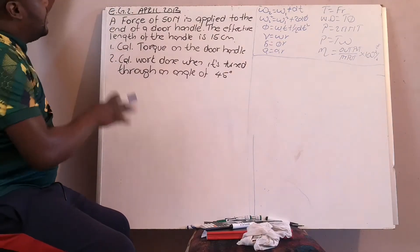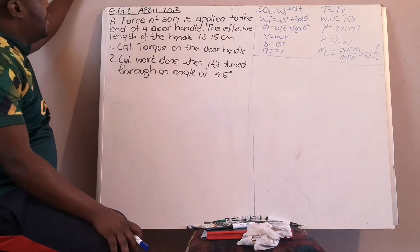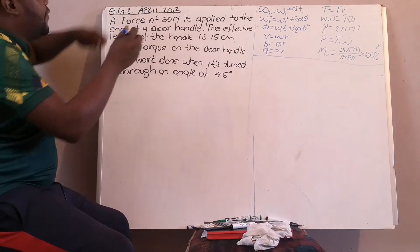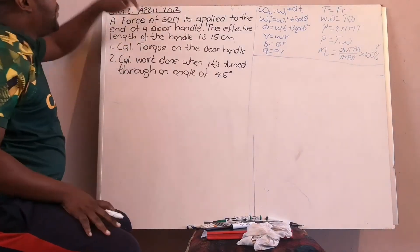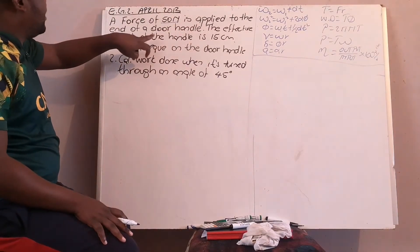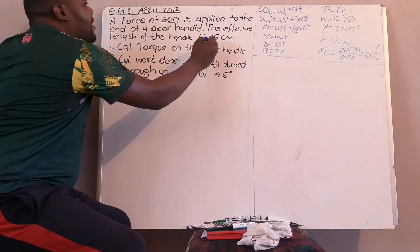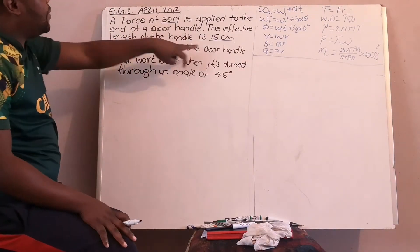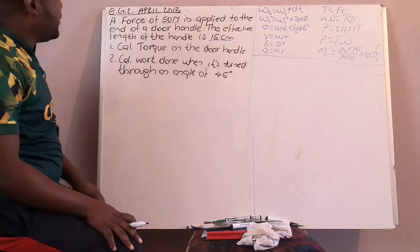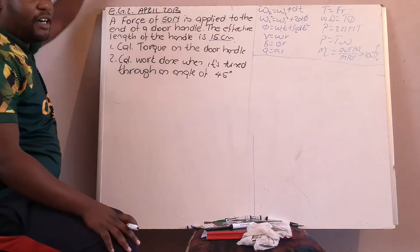Here's an example of angular motion. Let's analyze the problem again. You have a force of 50 newtons applied to the door handle. The effective length will act as your radius, so you have an effective length of 15 centimeters. Calculate your torque.